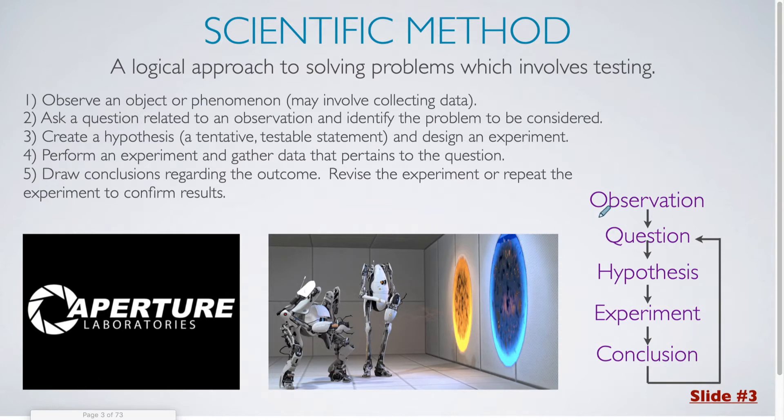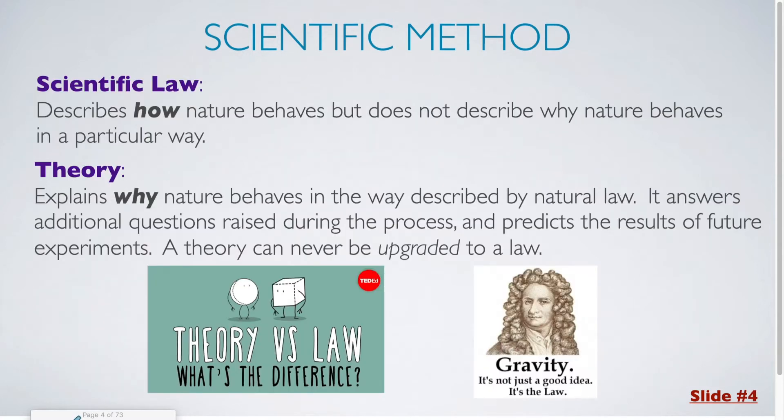And you can see all that summarized in our flowchart here. Two concepts that are often mixed up are scientific law and theory. A scientific law describes how nature behaves but does not describe why nature behaves in a particular way, whereas a theory explains why nature behaves in the way described by natural law. It answers additional questions raised during the process and predicts the results of future experiments. A theory can never be upgraded to a law.